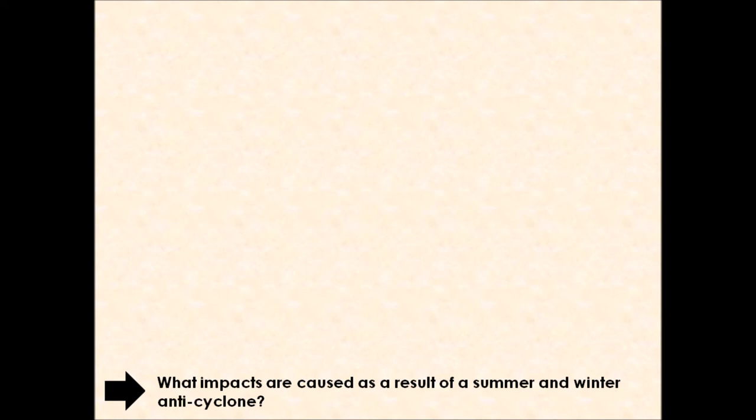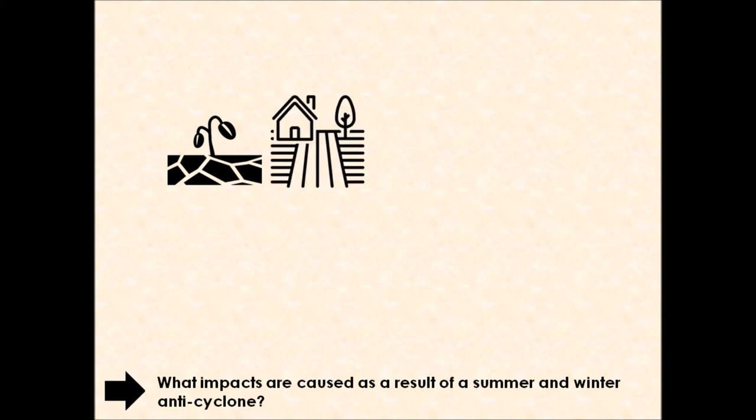If we start off first looking at a summer anticyclone and the impacts they cause, for GCSE examinations you need to know some of these impacts in a relatively small amount of detail. First impact associated with the summer anticyclone is crop failure. If we do not receive precipitation for a period of time, that means that farmers crops and the produce that they are growing begins to fail and die due to limited water. We can have crop failure which puts pressure on food supplies and farmers also lose income as a result.